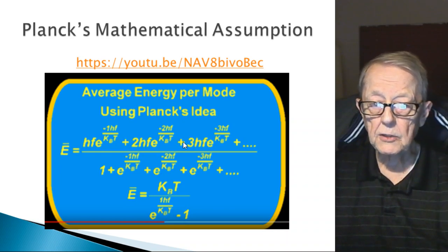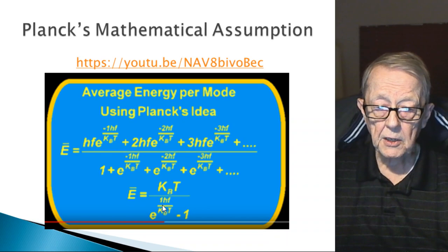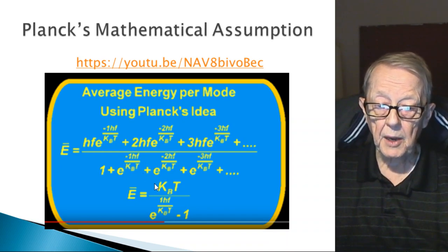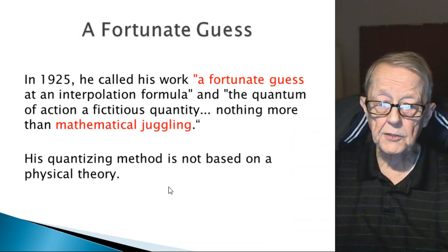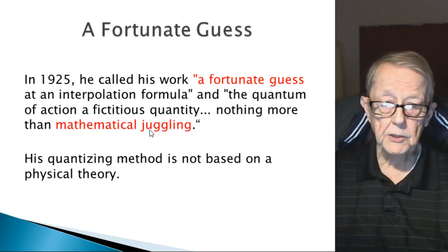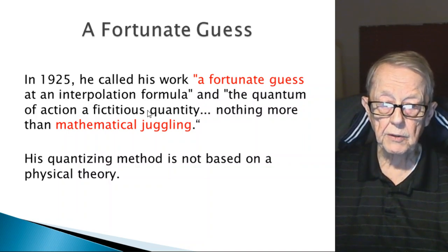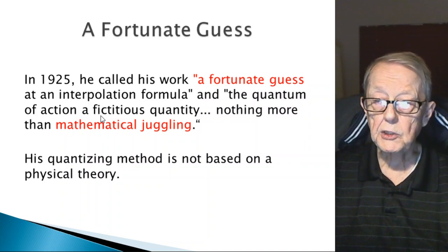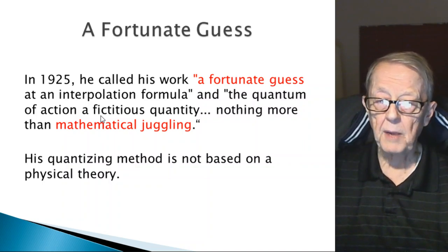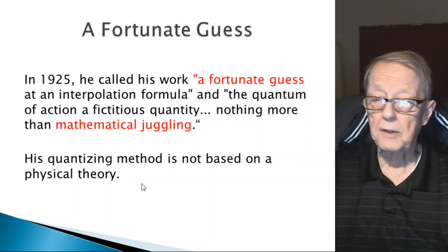These are infinite series — an infinite number of oscillators. The equation does include the first term, which dominates in the final equation. It was 25 years after he did that work that Planck called it a 'fortunate guess' and an 'interpolation formula' — an empirical formula where the quantum of action is a 'fictitious quantity,' not real. He thought it was just mathematics, nothing more than juggling. His quantized method is not based on a physical theory.